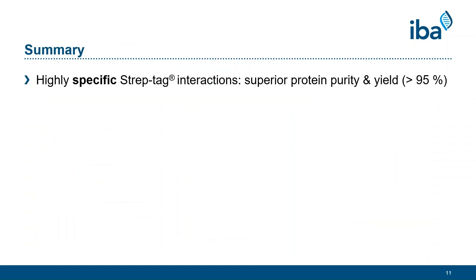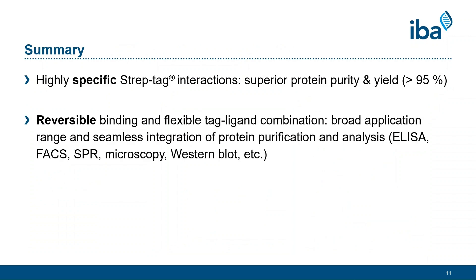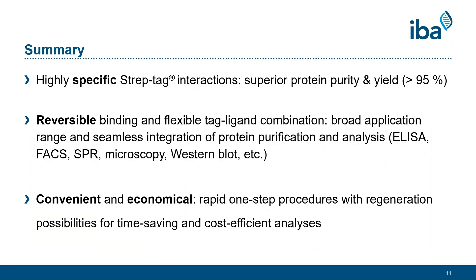In summary, the high specificity of the Streptag-Streptactin interaction results in superior protein purity and yield during purification. IBA's engineering of a reversible binding mechanism opens up this technology to a vast range of applications for protein measurements and imaging. The straightforward purification procedure and multiple regeneration cycles without loss of binding capacity make the use of Streptag technology especially convenient and economical. For some applications, analysis can even directly be performed from host cell lysate without the need for a prior purification.